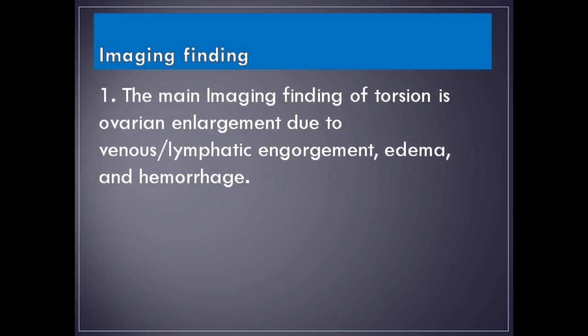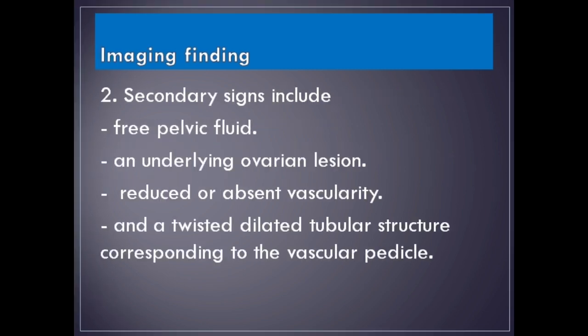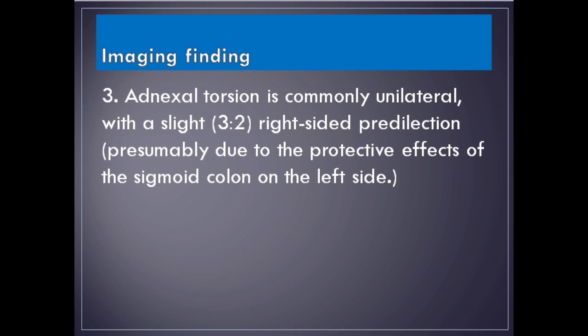Imaging findings. The main imaging finding of torsion is ovarian enlargement due to venous and lymphatic engorgement, edema, and hemorrhage. Secondary signs include free pelvic fluid, an underlying ovarian lesion, reduced or absent vascularity, and a twisted dilated tubular structure corresponding to the vascular pedicle. Adnexal torsion is commonly unilateral, with a slight right-sided predilection, presumably due to the protective effects of the sigmoid colon on the left side.